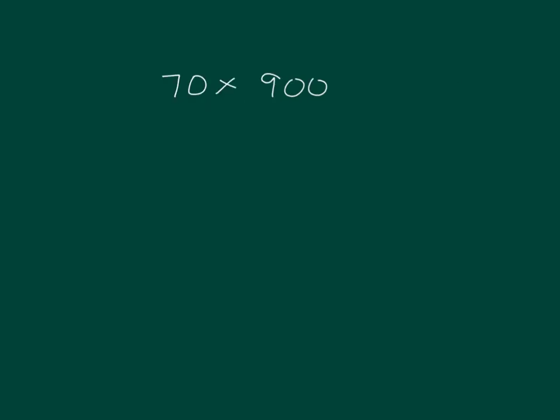Here are a few more. 70 times 900. 70 breaks apart into 7 times 10, and then we're multiplying by 9. 900 breaks down into 9 times 100. Group 7 and 9 together.